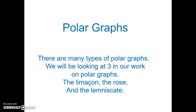Now that we know about polar coordinates and polar equations, we're going to look at polar graphs. There are many types of polar graphs, but we're only going to be looking at three: limacons, roses, and lemniscates. This lesson is going to be over limacons only, and we'll have other lessons over the other two types of polar graphs.